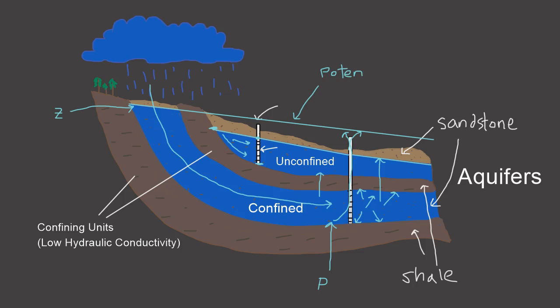The potentiometric surface is basically just where the water would flow to if you were to puncture that confined aquifer and let the water flow up as a result of the pressure built up within that confined aquifer. It's basically a pressure measurement within that aquifer.